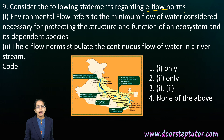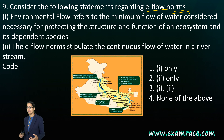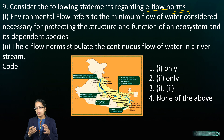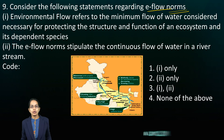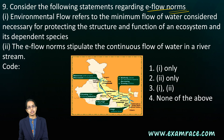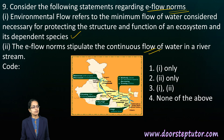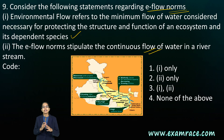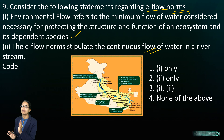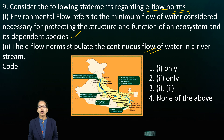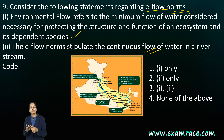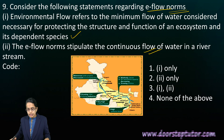The next topic is e-flow norms. NMCG focused on the cleaning and rejuvenation of the river. Environmental flow is the minimum water required to protect the ecosystem of the region and the species dependent on it. This statement is correct. It aims to bring a continuous flow of water in a river stream, because if the river dries up the ecosystem and species would be affected. This minimum flow can be enhanced by having more dams and barrages to release water in times of need.